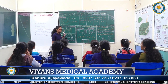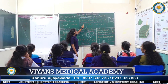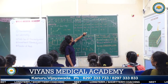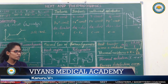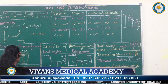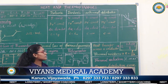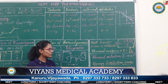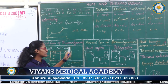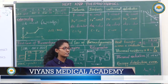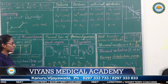Let us apply the First Law expression DQ = DU + DW to these different processes. In isochoric process, as delta V is 0, delta W is 0, so DQ = DU. In isothermal process, as DT is 0, DU is 0, so DQ = DW. In adiabatic process, as DQ is 0, we get DU = -DW.